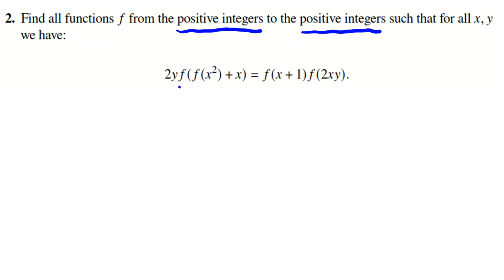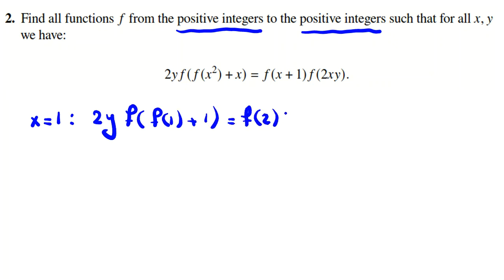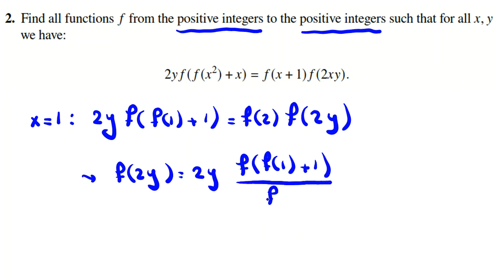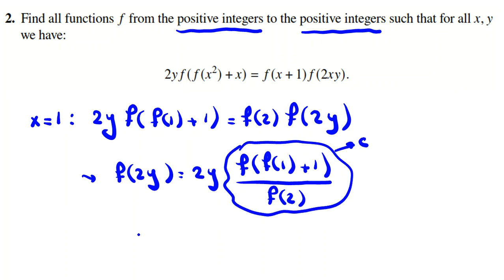Here we have a complicated term, so one useful approach is to substitute a small value to simplify it. We consider the special case x equals 1, which gives us 2y·f(f(1)+1) = f(2)·f(2y). We can conclude that f(2y) equals 2y·f(f(1)+1) divided by f(2). We call this constant c, so f(2y) = 2yc.